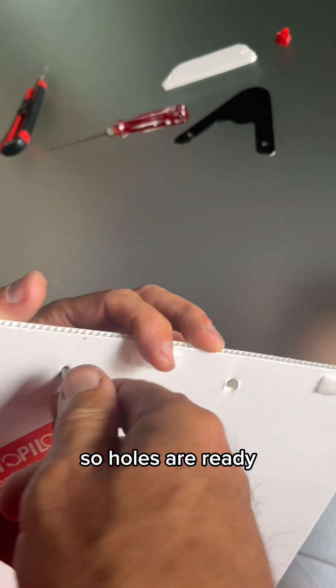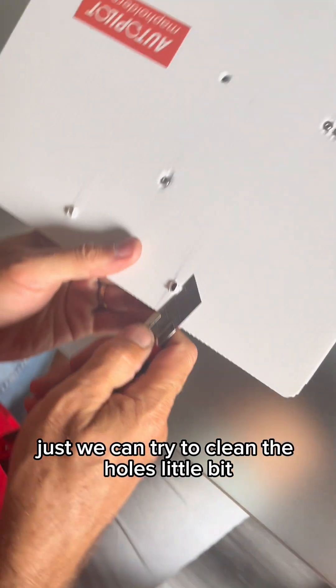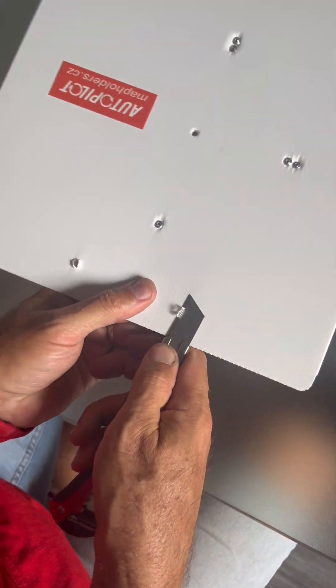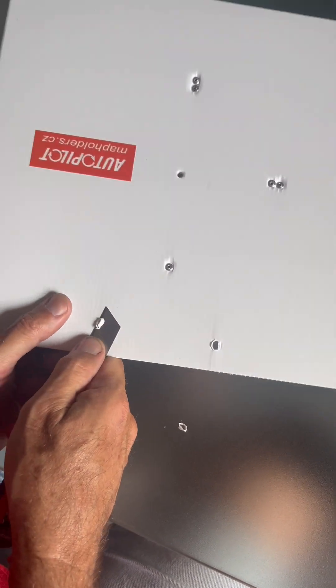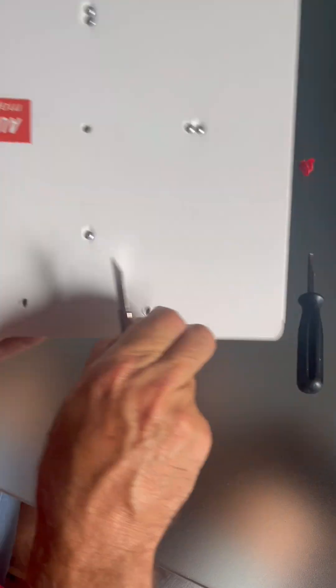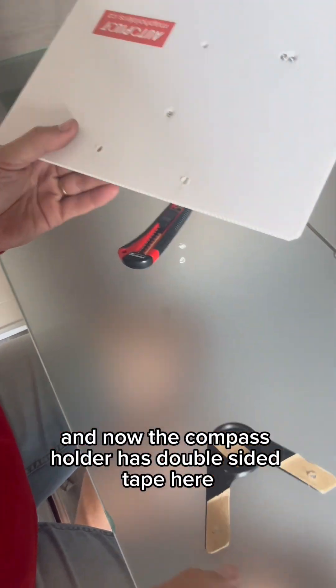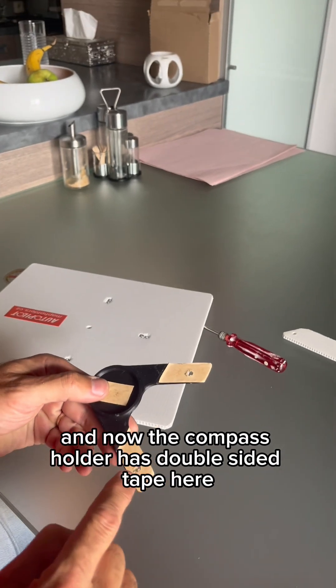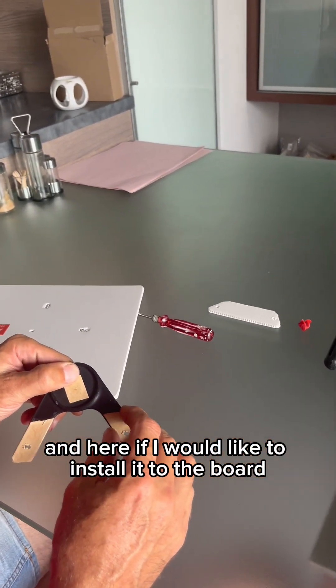So the holes are ready. Just we can try to clean the holes a little bit. Ready. And now the compass holder has double-sided tape here and here.